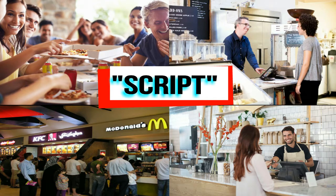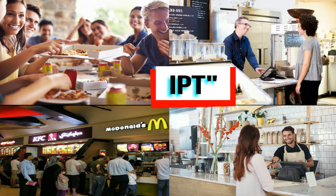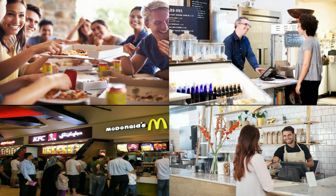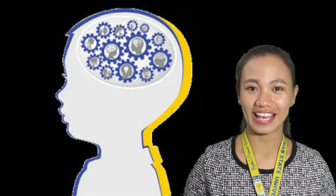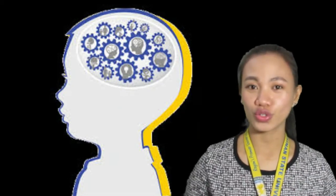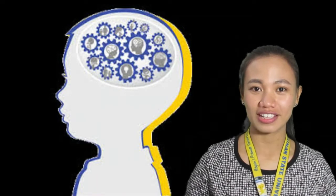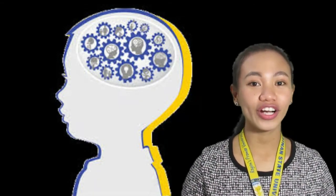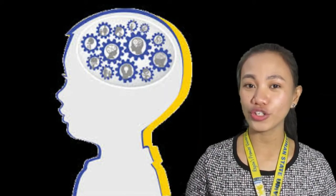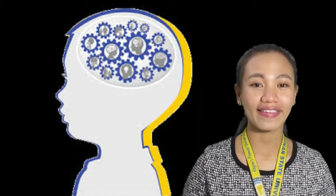Whenever they are in a restaurant, they retrieve this schema from memory and apply it to the situation. The schemas Piaget described tend to be simpler than these, especially those used by infants. He described how, as a child gets older, his or her schemas become more numerous and elaborate.